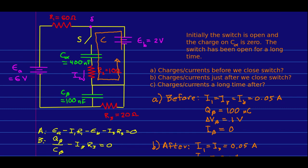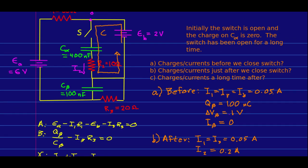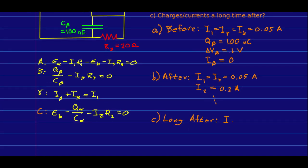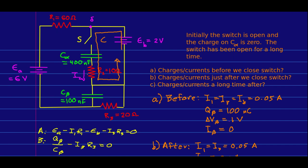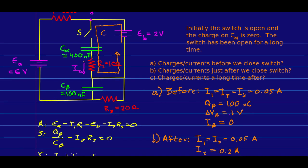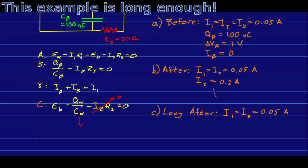Now let's look at a long time after closing the switch. There is no current through either capacitor, so we're back to current only running around the outside loop. Loop A tells us that I_1 and I_3 are the same and equal to 0.05 amps — they don't appear to have changed at all. However, in between when we closed the switch and much later, I_1 and I_3 probably did change transiently but ended up returning to their original values. Since I_2 is zero, we can now solve for Q_alpha out of loop C.